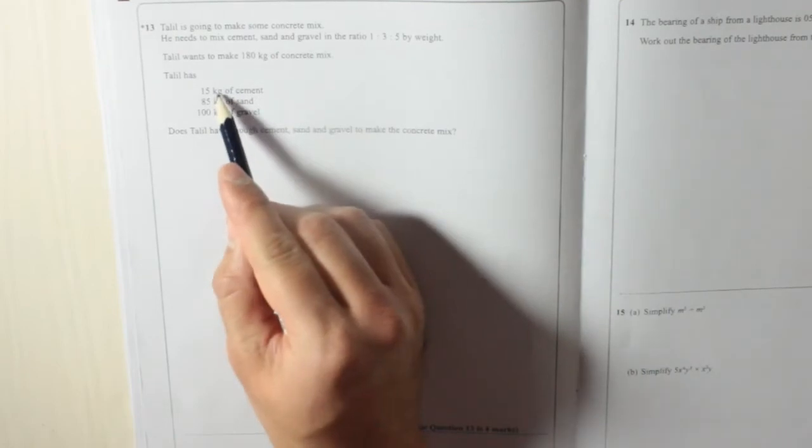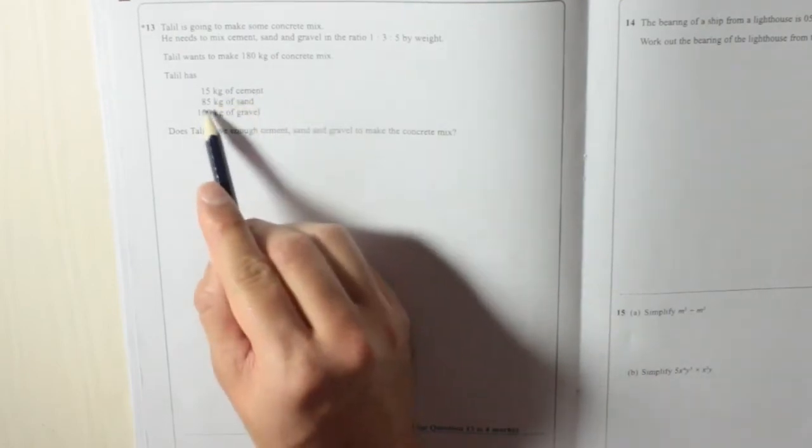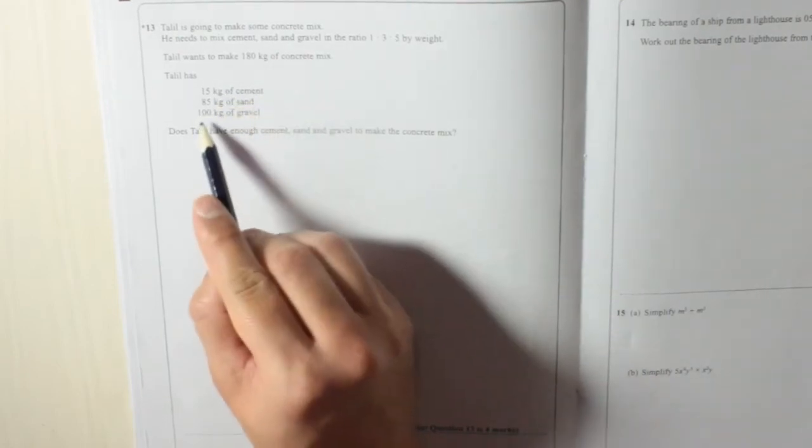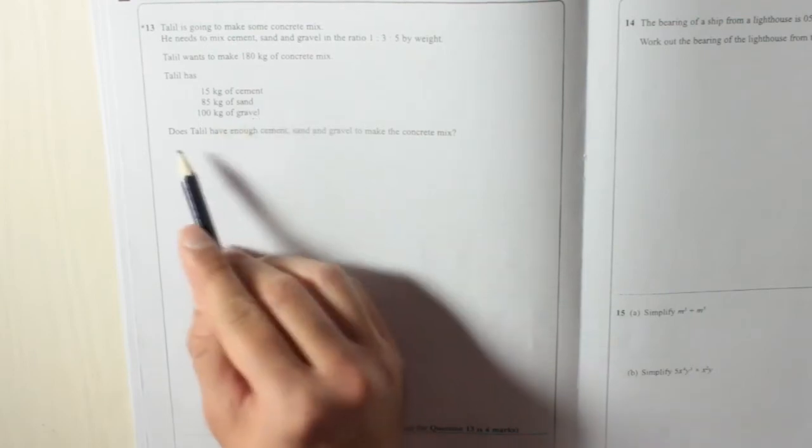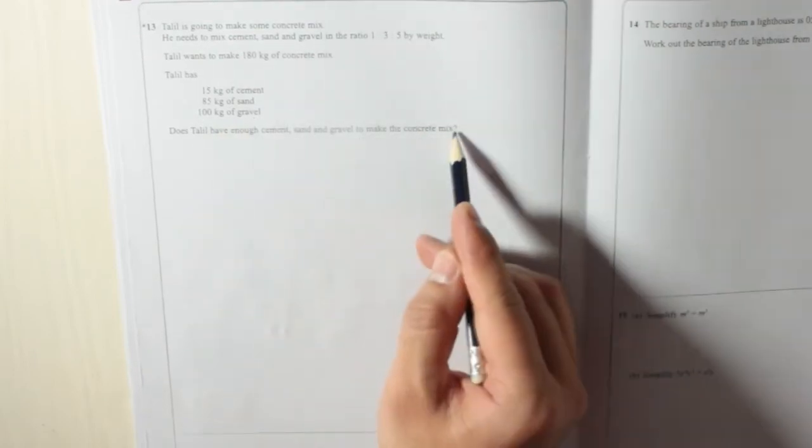Talil has 15 kilograms of cement, 85 kilograms of sand, 100 kilograms of gravel. Does Talil have enough cement, sand and gravel to make the concrete mix?